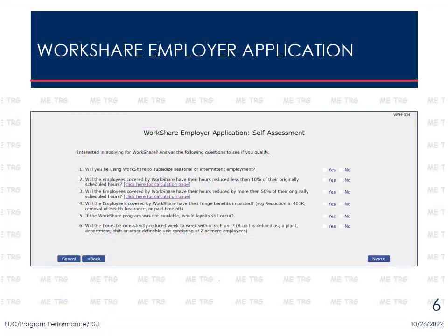The Self-Assessment screen presents six questions that will determine whether an employer may be eligible to participate in the WorkShare program. Answer the questions as applicable, using the Calculation Page hyperlinks for help if necessary. These questions are to determine eligibility only, and answers will not be saved in the system. When all questions have been addressed, select Next.